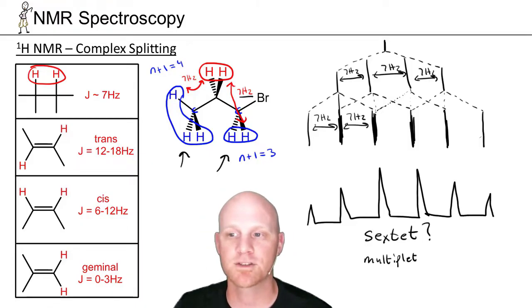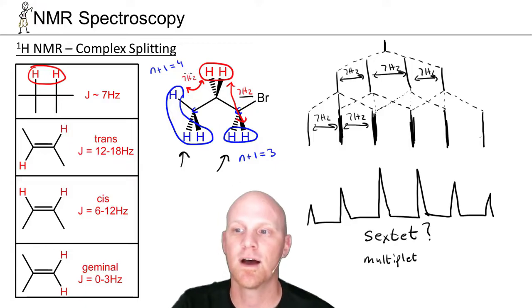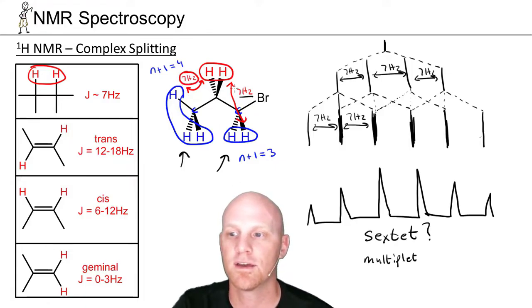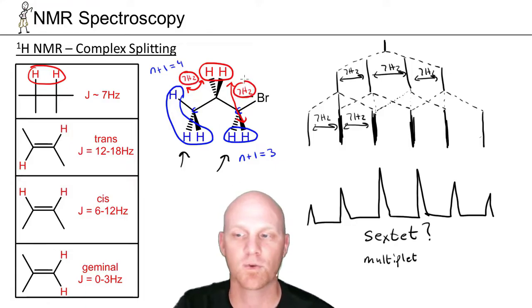That's what happens when you have equal J coupling values between non-equivalent sets of neighbors.